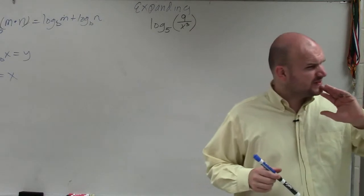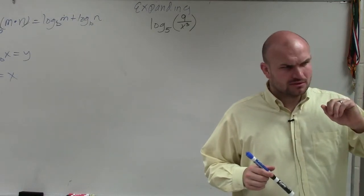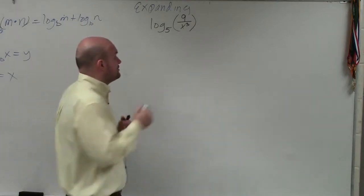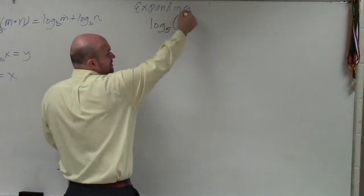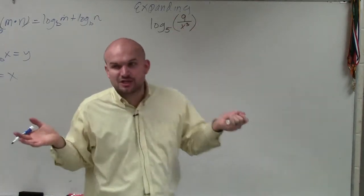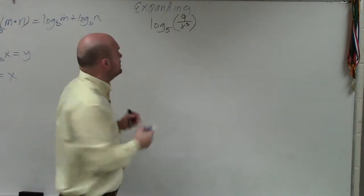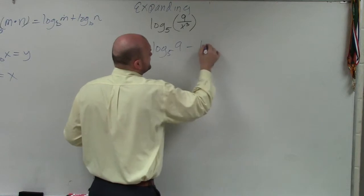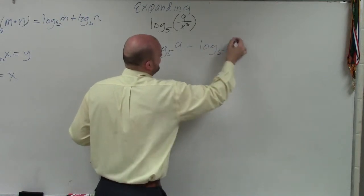So, Erica, what we're going to have to do in this example is, again, when using the quotient rule, we're going to separate the quotient of my numerator and denominator by the subtraction of two separate logarithms. So therefore, I'll rewrite this as log base 5 of 9 minus log base 5 of x cubed.